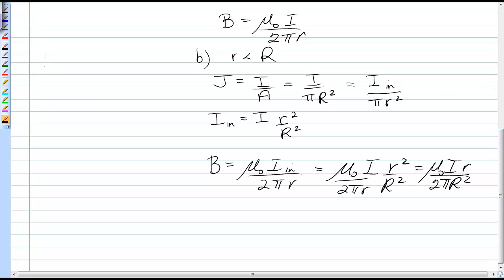If I were to graph this magnetic field as a function of r, putting the boundary R in the graph, we see that inside the wire, the magnetic field is a linear function, so it increases as you move towards the edge of the wire. Once you're outside, it acts like an infinitely long wire and decreases as 1 over r.